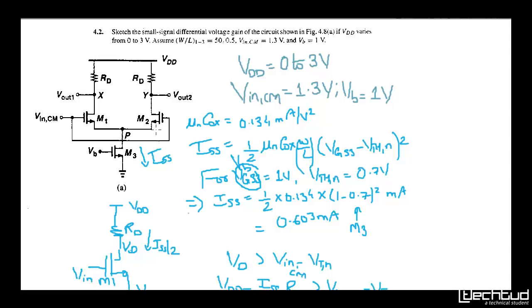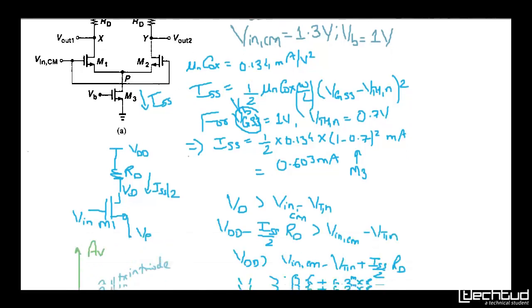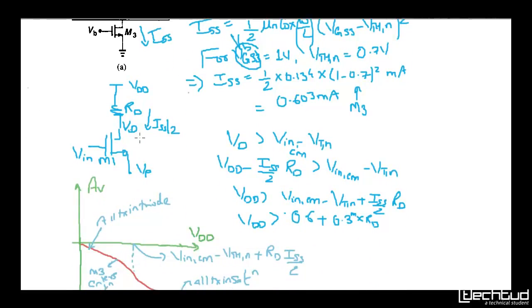Even if M1 or M2 enters the linear region, the same current will still flow because the common mode voltage controls it. Since the same voltage appears at both sides, this is a symmetrical network. Now consider only M1: the branch carries Iss/2, and we label the drain voltage Vd and source node Vn.